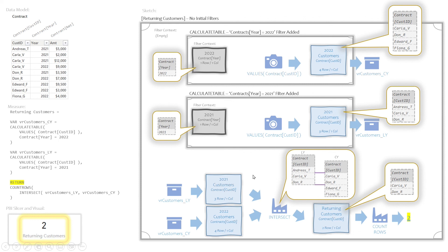This INTERSECT function is really powerful and you can use it for all kinds of things. Most commonly it's used for something like this — returning customers, or comparing two different periods, or even two different geographies. Maybe you've got a list of customers in Florida and a different list in New York and you want to know who's in both — you can intersect the two lists and count the result. It's also a great example of thinking in tables: get the two tables, perform a set operation to find the common values, get your final temp table, and count it. I hope that was helpful, and I'll see you folks in the next video.